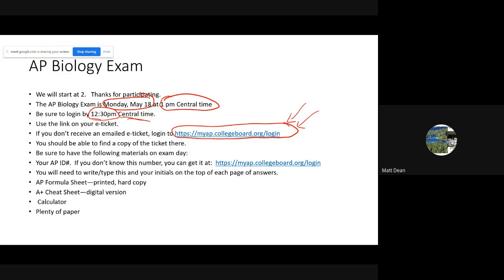Click that button to go to the exam. On the day of the exam, you're going to need to know your AP ID number, which will be on your e-ticket or prominently displayed in My AP. Write down that number and make sure you have it with you — you're going to need to write or type that number and your initials at the top of each page of your answers.